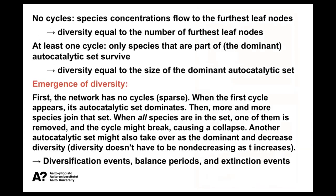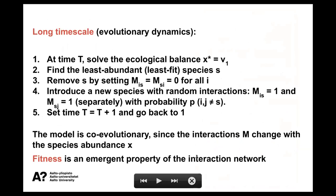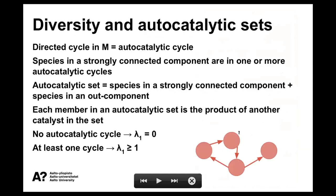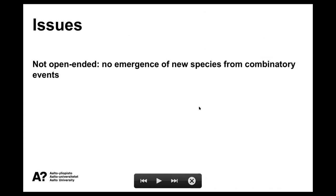We now have a system that explains fitness as an emergent property of the interaction network and also exhibits punctuated equilibrium dynamics. There are also downsides: this model is not open-ended - we have to decide on the number of species beforehand and there are no new species created from combining existing species. We have co-evolutionary dynamics, punctuated equilibria, and a good fitness definition, but we don't have open-endedness and we don't have combinatorial evolution.